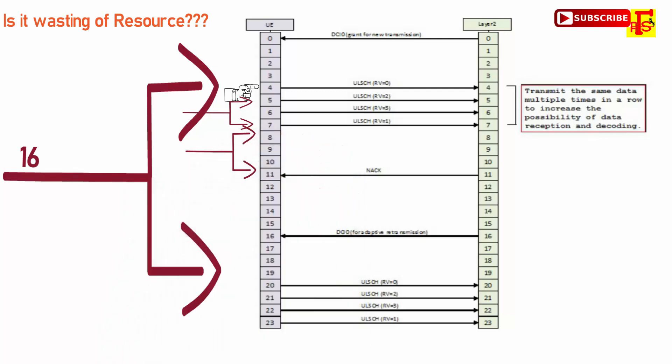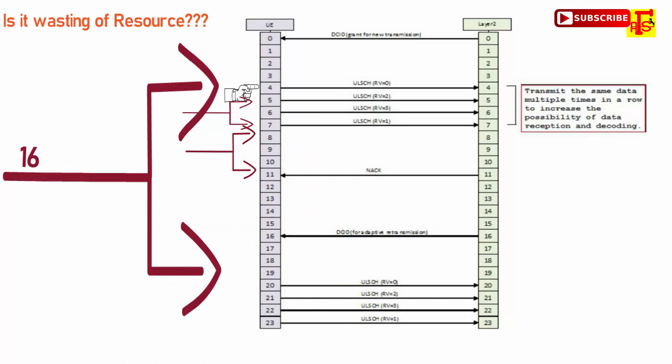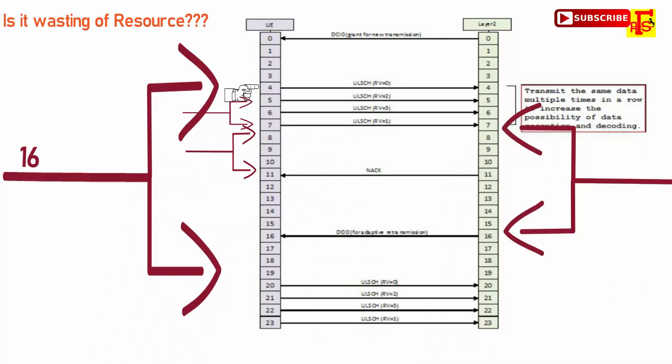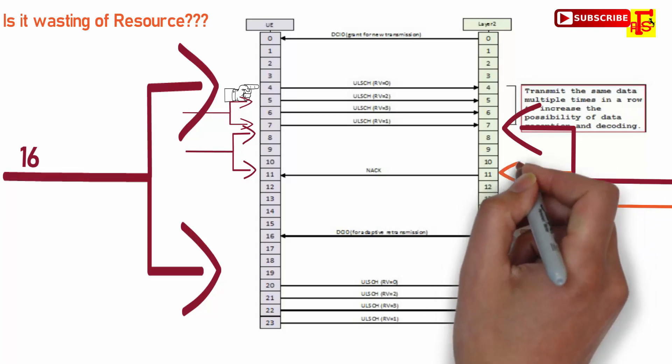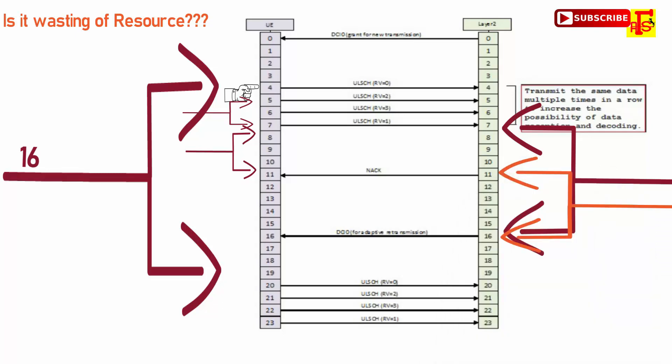If NAK is received, then the retransmission will happen at plus 9 TTI from the reception of NAK, and if the retransmission is adaptive, then DCI-0 is sent at plus 5 TTI from reception of NAK. Retransmission packet will also be a bundle. Also, TTI bundles can be enabled in FDD and also for TDD for the DL-UL configuration 0, 1, and 6. And FGI bit for TTI bundling in UE capability is 28. FGI bit 28 indicates that UE supports TTI bundling.